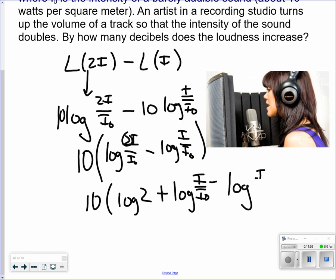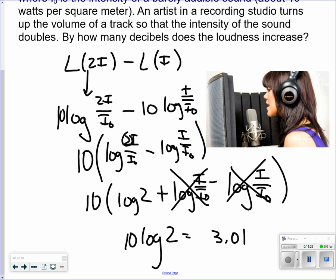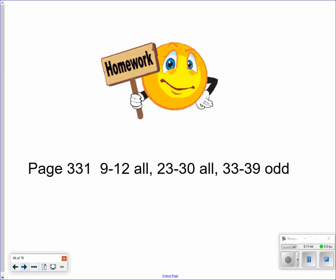So what ends up happening, and this will not be on a test or a quiz, by the way, is these two are going to cancel each other out, leaving me with 10 log of 2. So if you are going to put that as a decimal, pulling out a calculator now, 10 times log of 2 is 3.01. So when you talk about how many decibels does the loudness actually increase, it increases by approximately 3.01 decibels. Decibels. If you take the intensity as double.